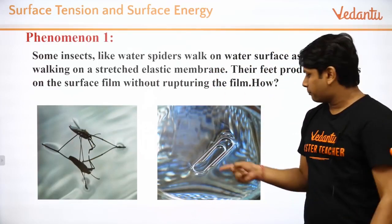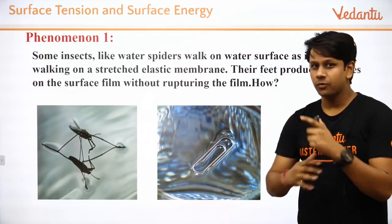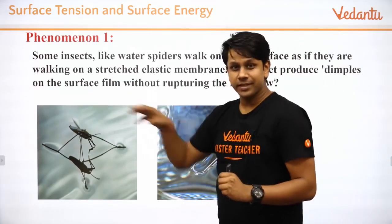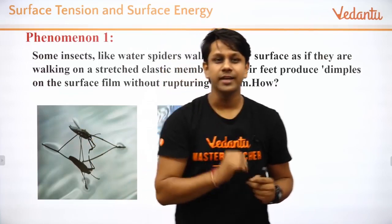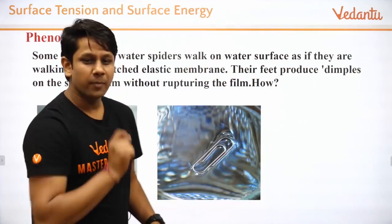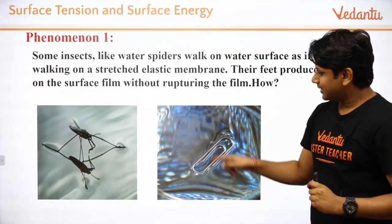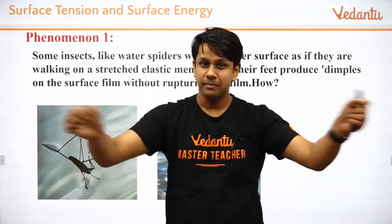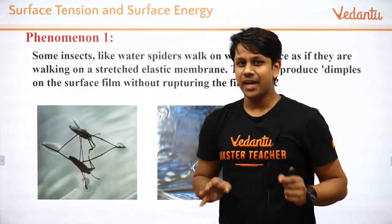Also, if you take a thin pin, that pin also floats on water. Now this floatation is not actually floatation in the buoyancy sense — it is not due to buoyant force. Buoyant force occurs when an object displaces a particular volume; the more volume displaced, the greater the buoyant force. But here the reason for floating is different. That reason we lovingly call surface tension.